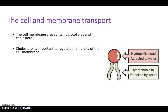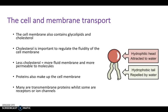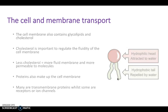Cholesterol is important to regulate the fluidity of the cell membrane. If we have less cholesterol, we have a more fluid membrane and it is more permeable to molecules. Vice versa if we have more cholesterol. Proteins also make up the cell membrane, and many are transmembrane proteins — in other words, they cover the whole of the membrane — and some are just covering part of it.